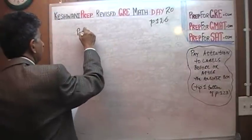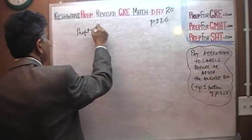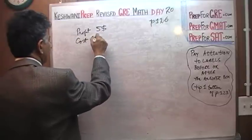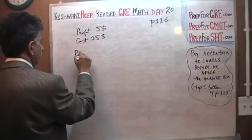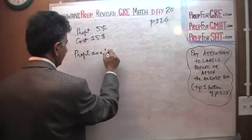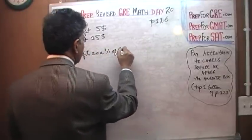We have a profit of $5. We have a cost of $15. The question simply is, what is the profit as a percentage of cost?